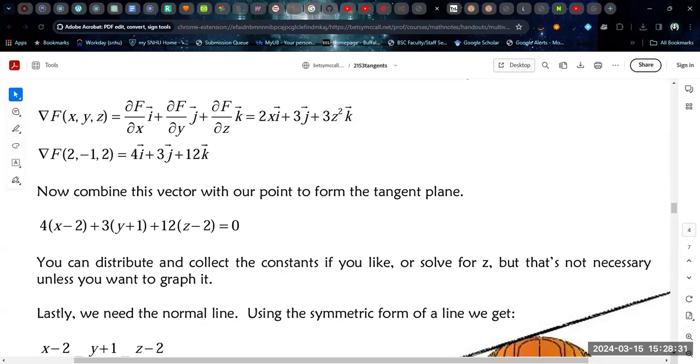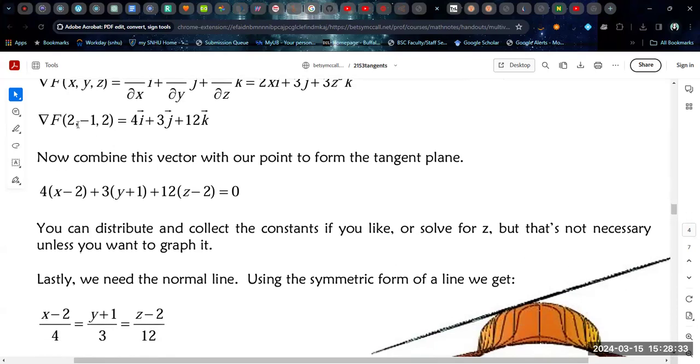And so to get the tangent plane, we combine this point with this vector in the plane equation, and so we get 4 times X minus 2 plus 3 times Y plus 1 plus 12 times Z minus 2, equals 0.